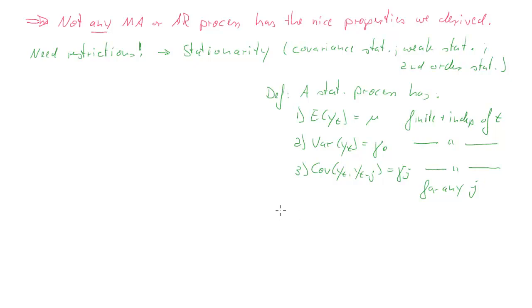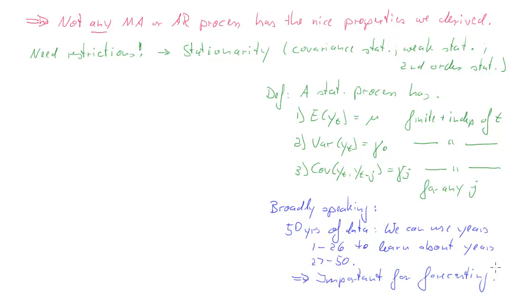So broadly speaking, what does that mean? I'll use a very broad view of how we could look at that. This means that if you have, say, 50 years of data for a particular process, if it is a stationary process, then in some sense you can use the years 1 to, say, 26, to learn about the properties for the process during the years 27 to 50. So we can use a subsample to learn about the characteristics of another subsample. And that is, of course, incredibly important if we think about forecasting.